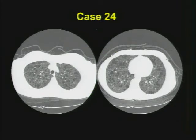As my wife, who's a gastroenterologist, likes to say: for every hole, there is a doctor for that hole. And in this case, we're the doctors for these holes. What's your differential based on the distribution of these cystic lesions? What other things might you think about?